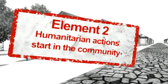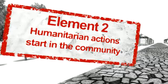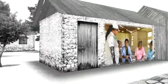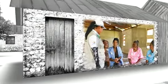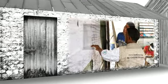Humanitarian action starts in the community. The people in the communities and neighborhoods are the first to be able to respond to adversity — preparing them saves lives. In El Salvador, during Tropical Storm 12E, several communities who had received training on how to face emergencies were able to organize themselves and evacuate in time, thus saving lives.